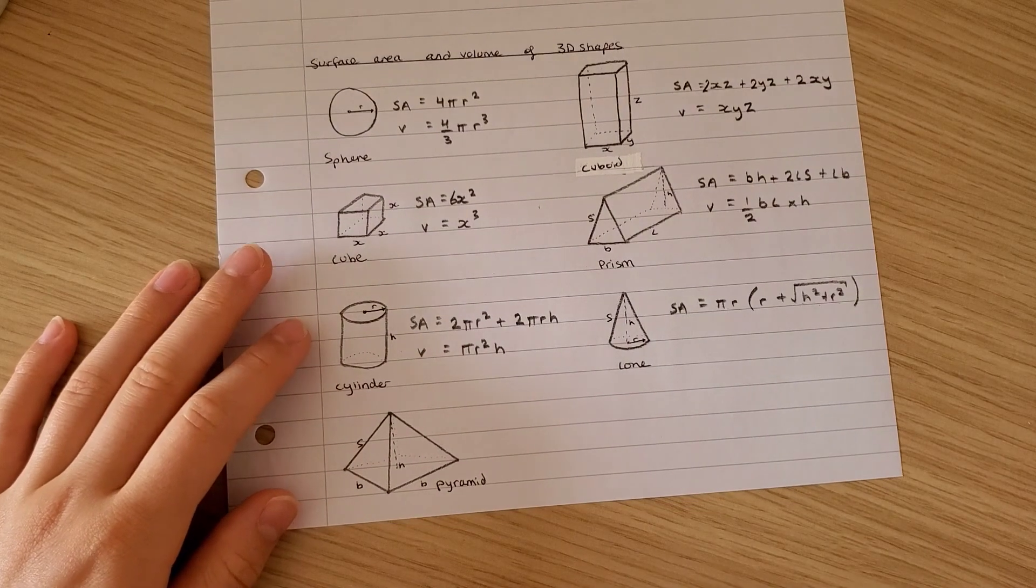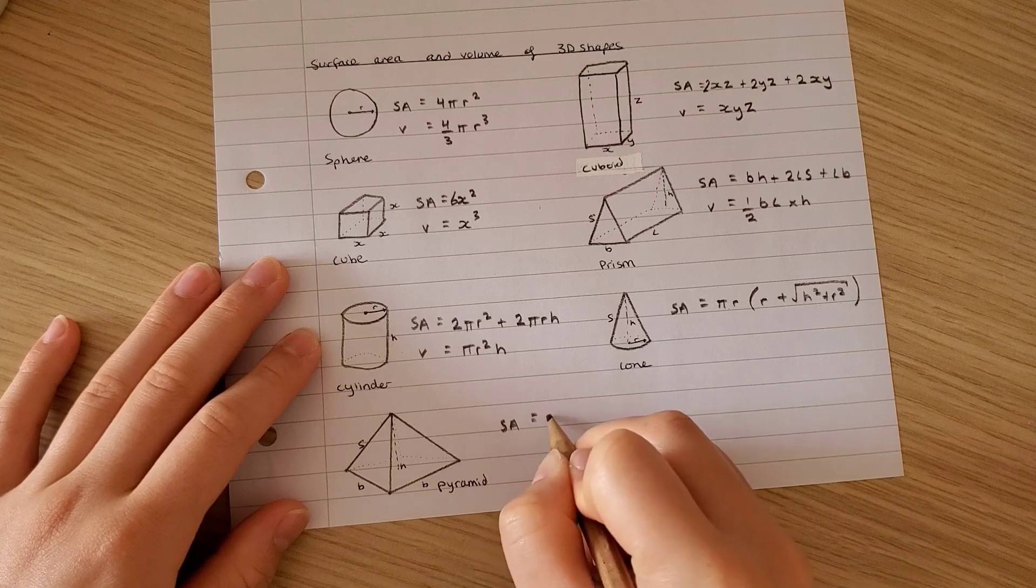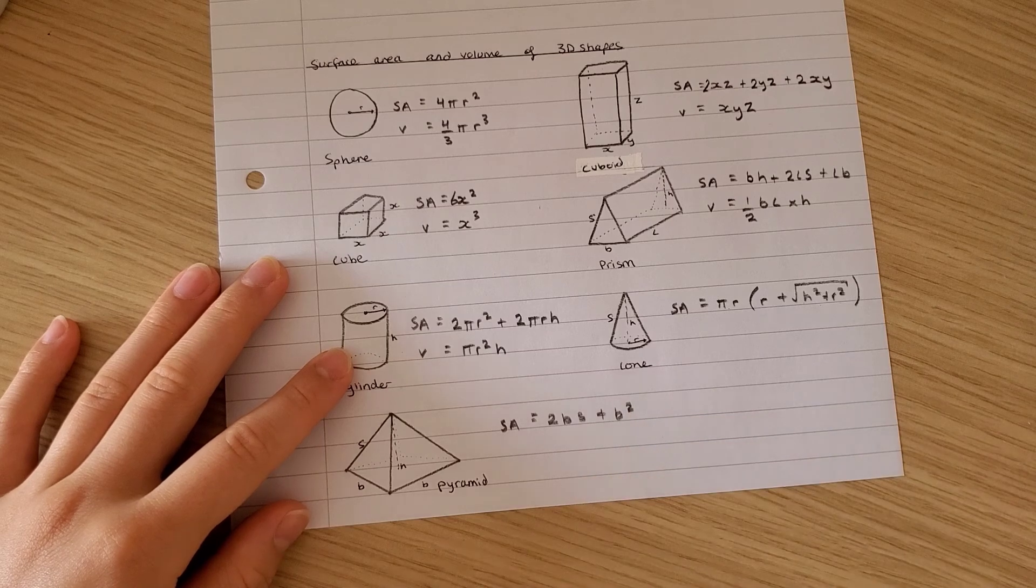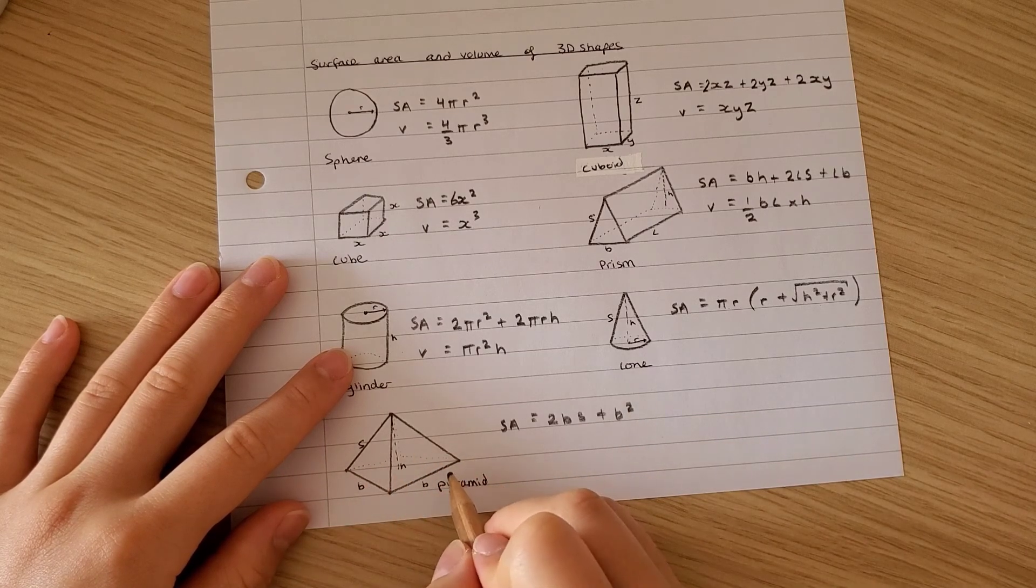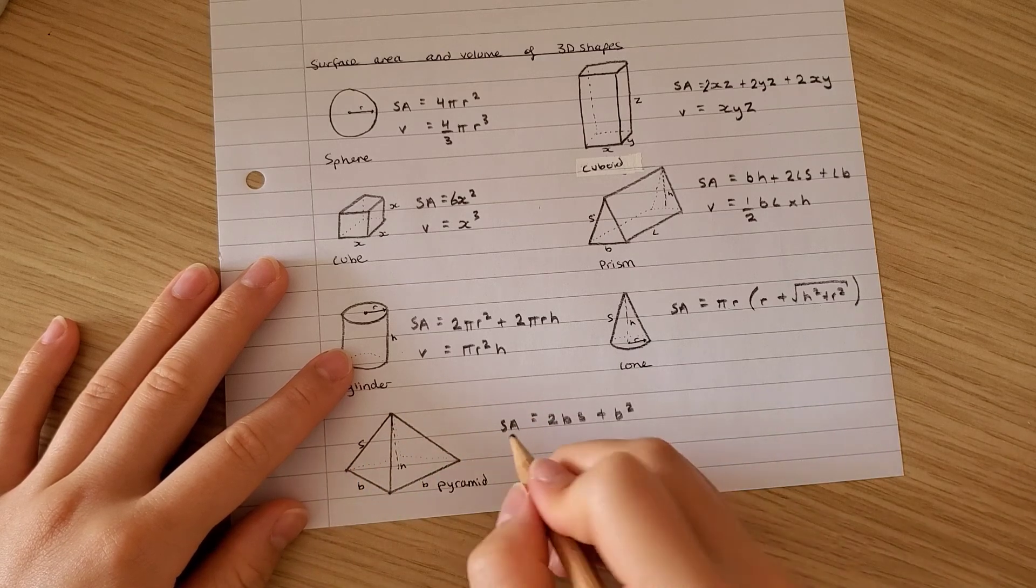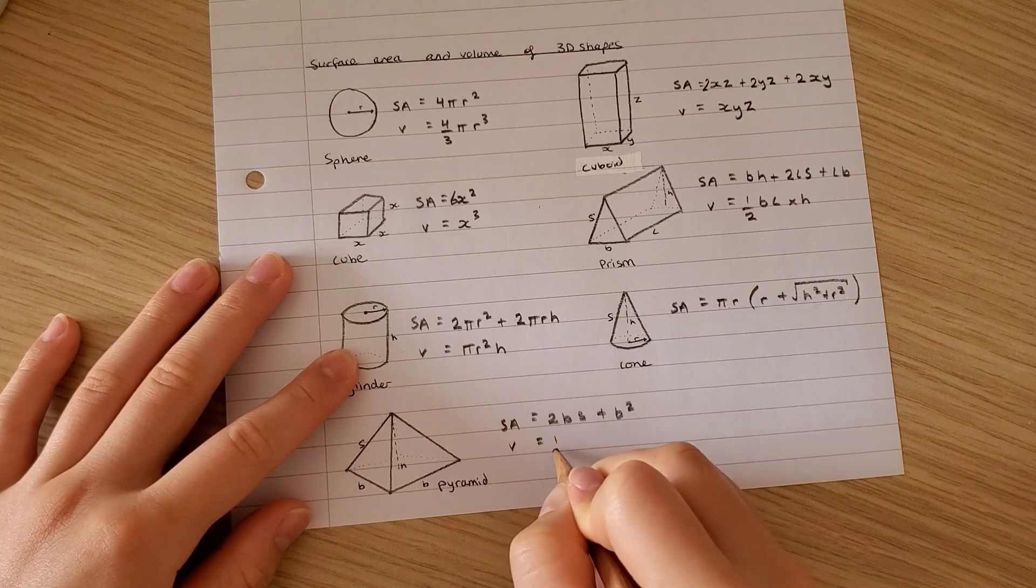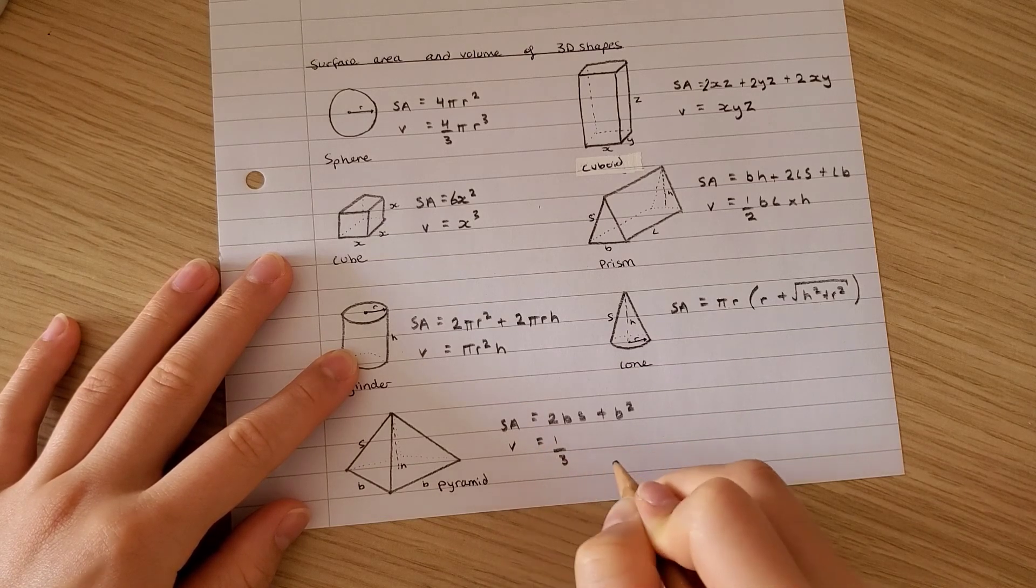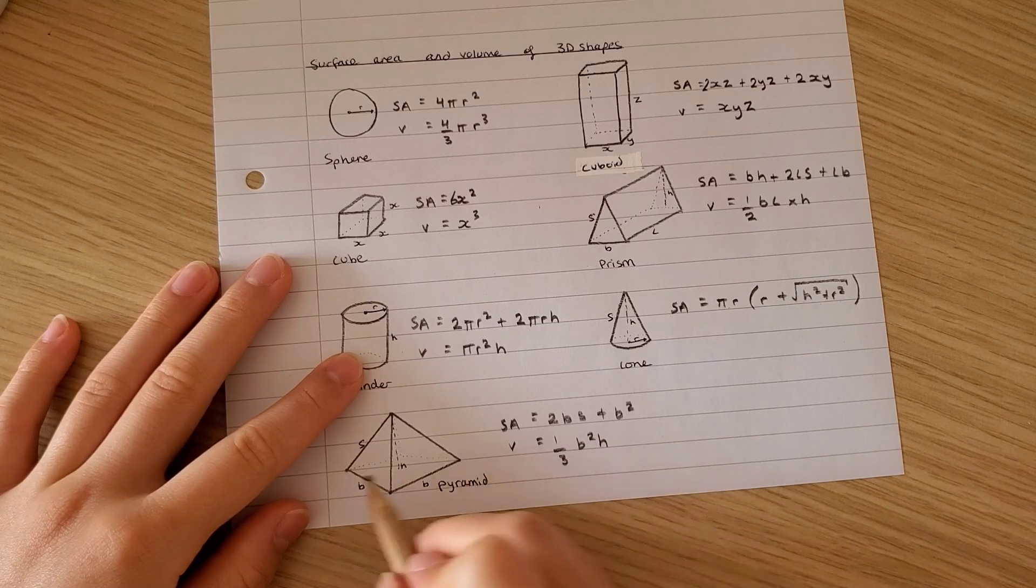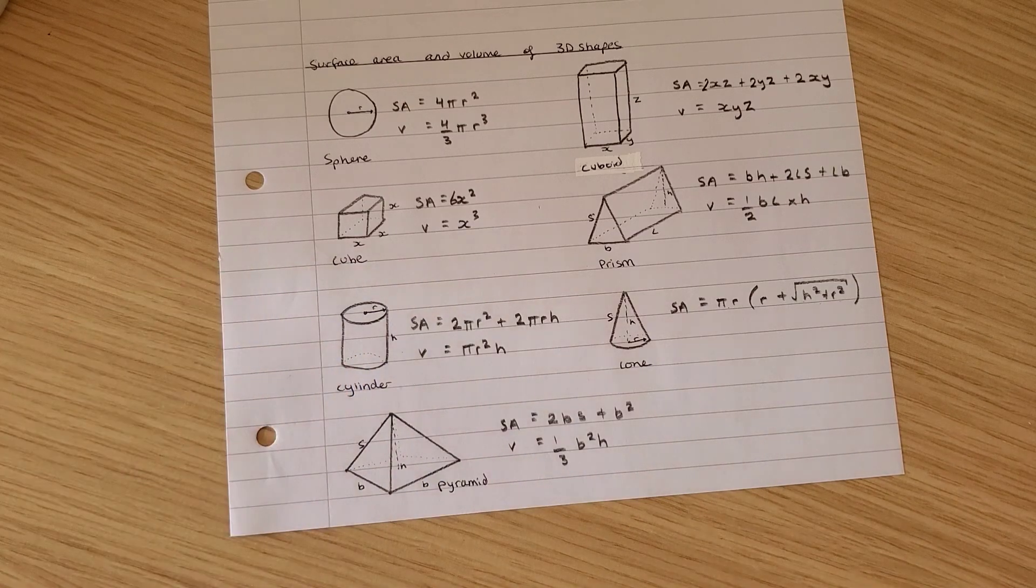For a square pyramid, the surface area is equivalent to 2bs, so b is the sides of the square and s is the slanted height, which you can calculate through Pythagoras. The volume is 1 over 3 b squared h, so it's 1 over 3 times the area of the base times the height. And that's it.